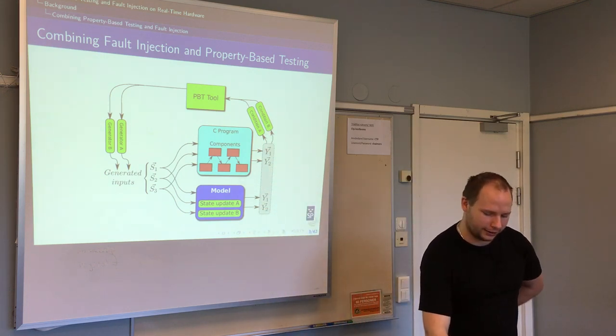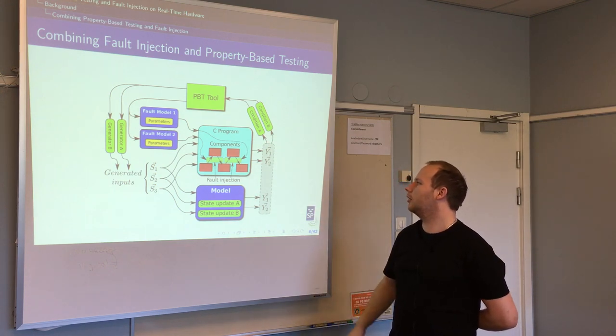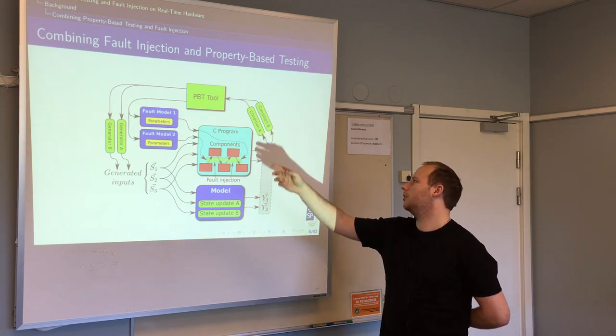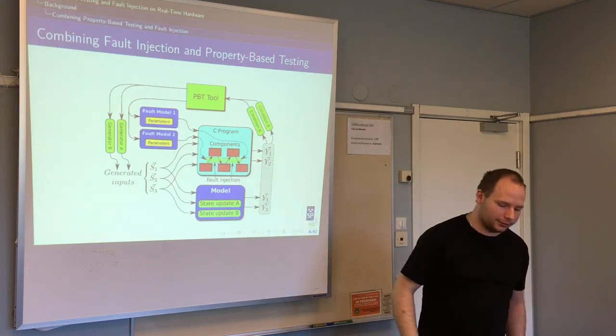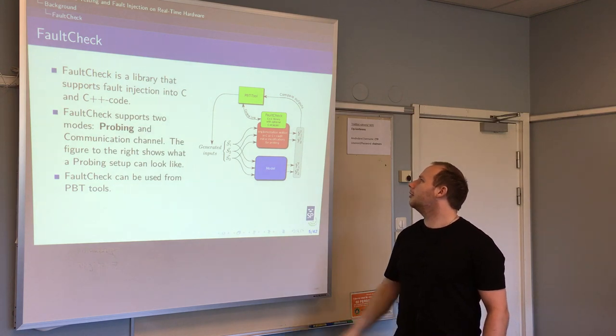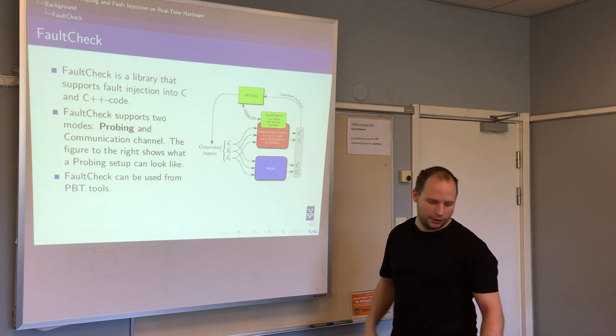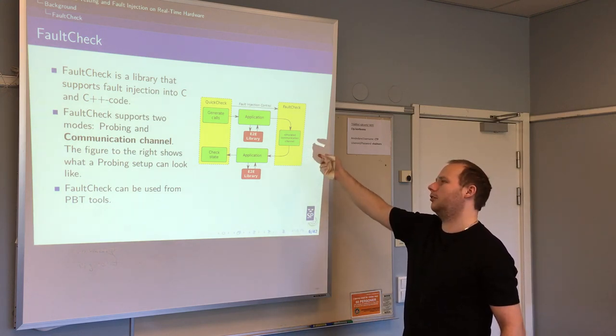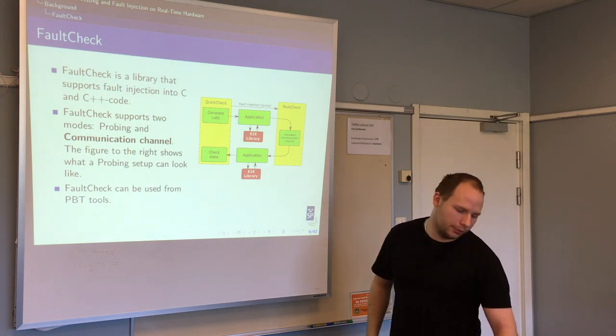I wanted to add something to add fault models into that, and take that into account, and also update the state based on - well, maybe you don't get the same output, but given this fault, you should have some fault handling mechanism that should achieve something else that is still valid. I wrote a simple tool called FaultCheck for that, that you can link with a C program. You can either use it with some probing in the program, or you can use a communication channel and then inject communication faults, and I did both of those in this quadcopter example.